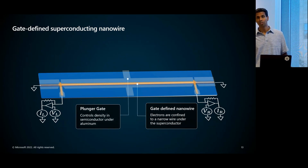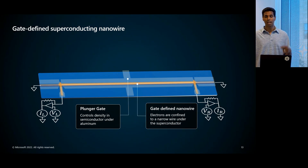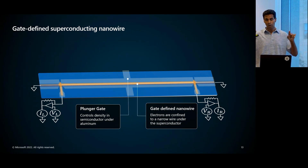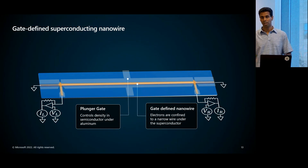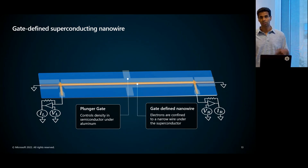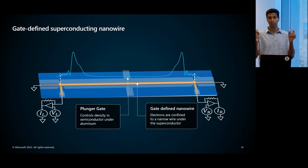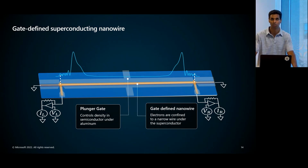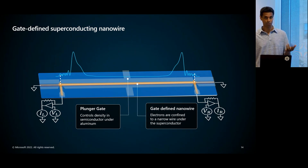The outer segments are made sufficiently negative as to fully deplete—you can think of them as just aluminum strips with fully depleted semiconductor underneath. But we don't do that to the middle segment, because that's the one we want to tune into the topological phase by tuning the density and the magnetic field. If we do that, we end up with a topological phase in the middle segment that has Majorana zero modes in its local density of states. There are junctions on the sides that we can use through transport experiments to detect those Majorana zero modes.